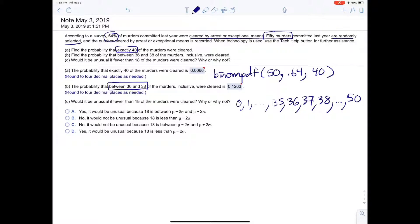So we want between 36 and 38, so what we're going to do is we're going to find, we're going to do it the following way. So binomial 50, 0.64, 38, that gives us from 0 to 38, and then we need to subtract off 0 to 35.